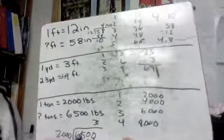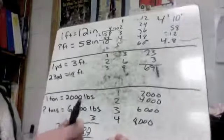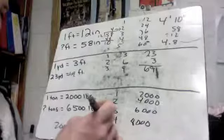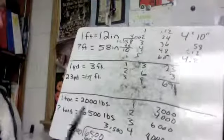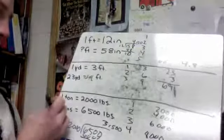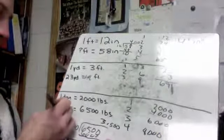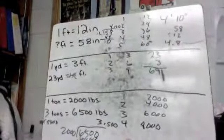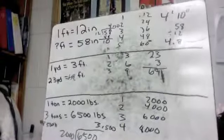So if we look at it, 6,500, 6,000, we're going to have a remainder of 500. So we're going to have three full tons with a remainder of 500 pounds. That would be your answer for that last one.